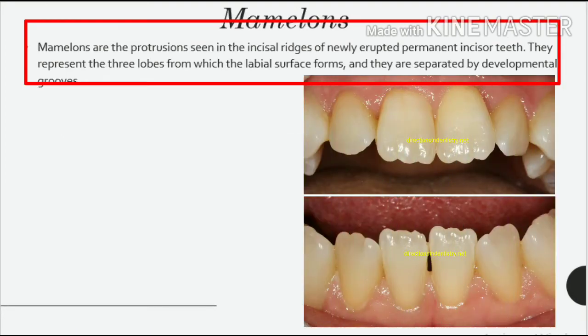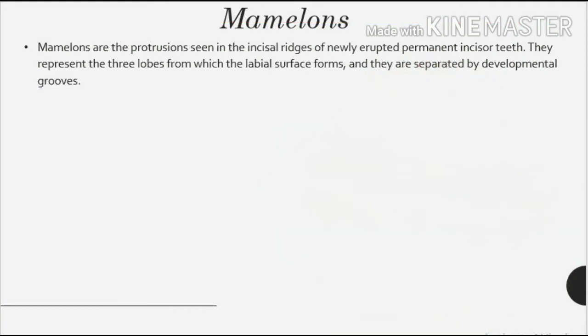Mamelons. Mamelons are the protrusions seen on the incisal ridges of newly erupted permanent incisor teeth. They represent the three lobes from which the labial surface forms, and they are separated by developmental grooves.